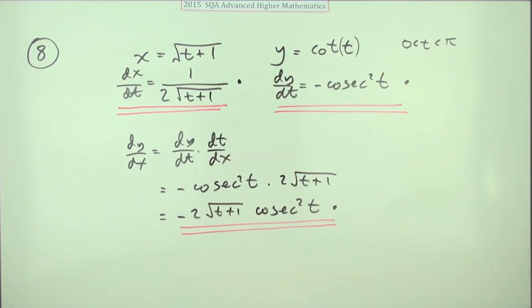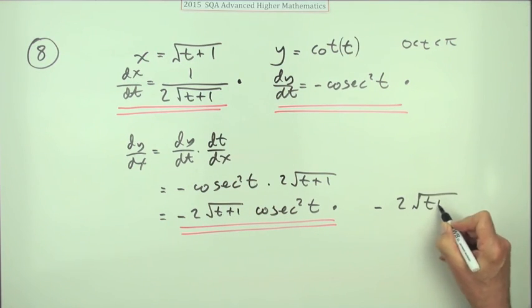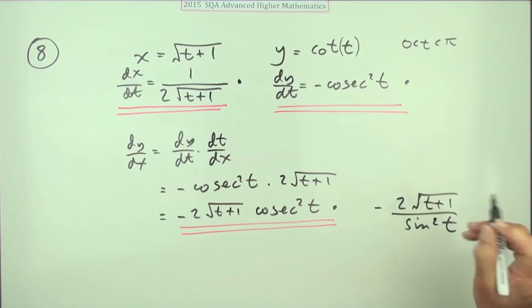Unless of course you'd like to see a little friendly face here instead of this cosec and write instead -2√(t+1) over sin²t.